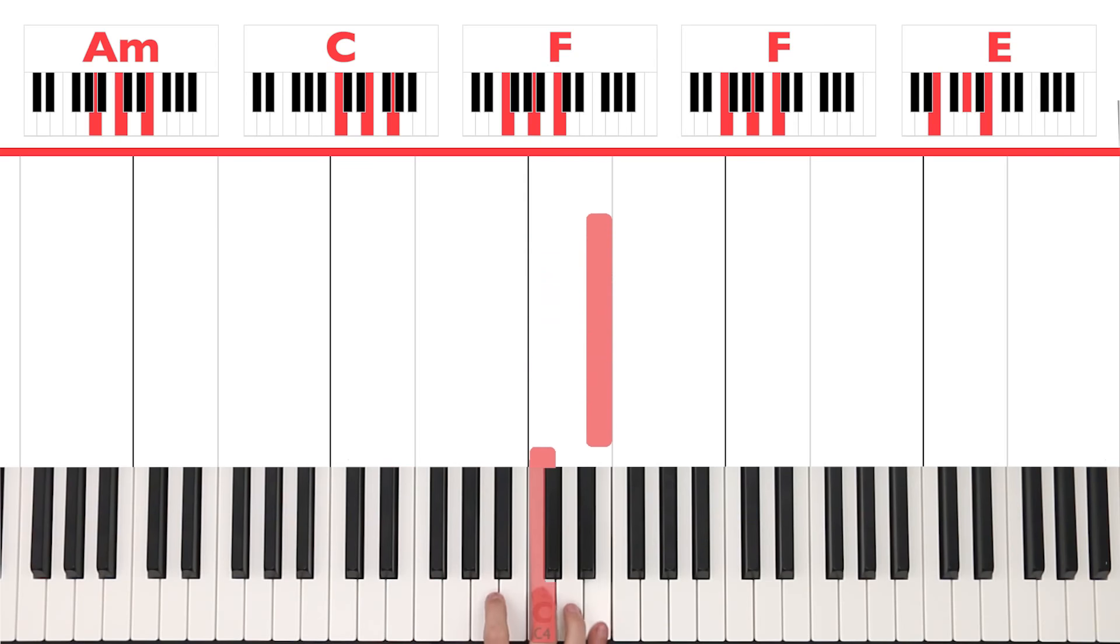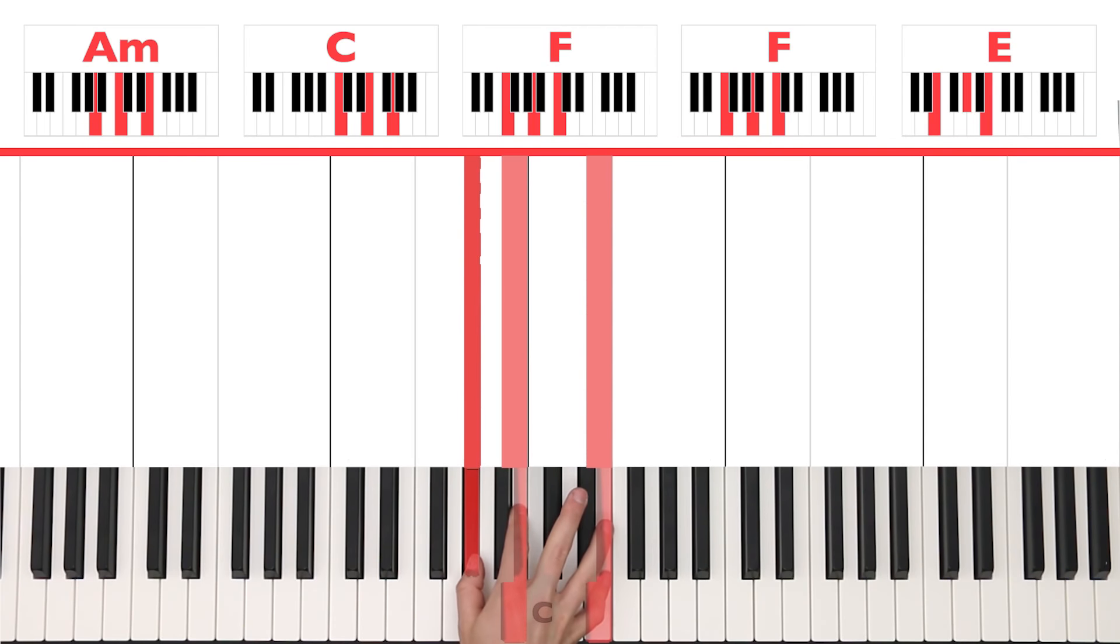So it's E, A, C, E. E, G, C, E. F, A, C, F. And then you're just going to play that full chord for the F and the E. So A, C, F. And G sharp, B, E. Fair enough, right?